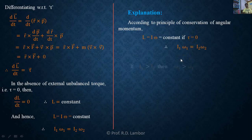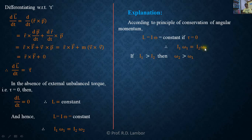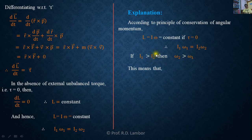If the moment of inertia of the body decreases, meaning I₁ is greater than I₂, then ω₂ must be greater than ω₁ — the angular speed of the rotating body should increase. According to this mathematical formula, if I₁ is greater than I₂ then ω₂ must be greater than ω₁, which means that if the moment of inertia of a rotating body decreases, its angular speed increases.